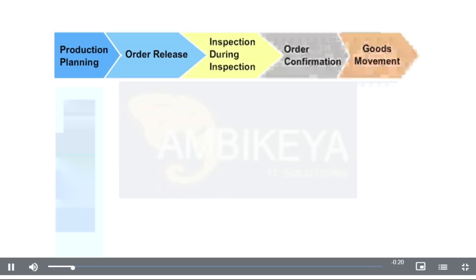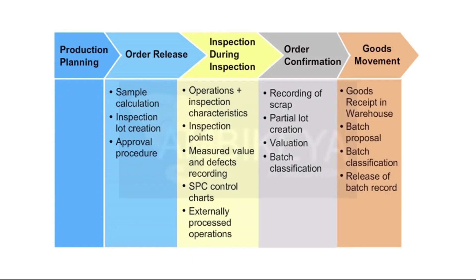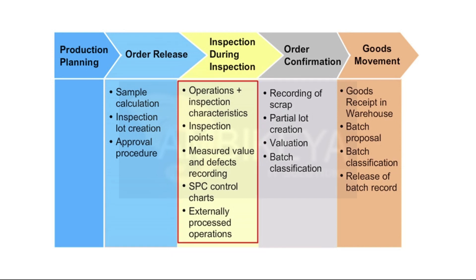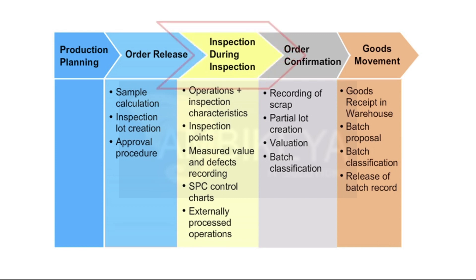In production, inspection specifications are integrated into the routing or into the master recipe, and this allows you to record quality management relevant information. The inspection operations are therefore integrated in the work processes of the production chain. Inspections during production and inspections for external processing are triggered automatically.